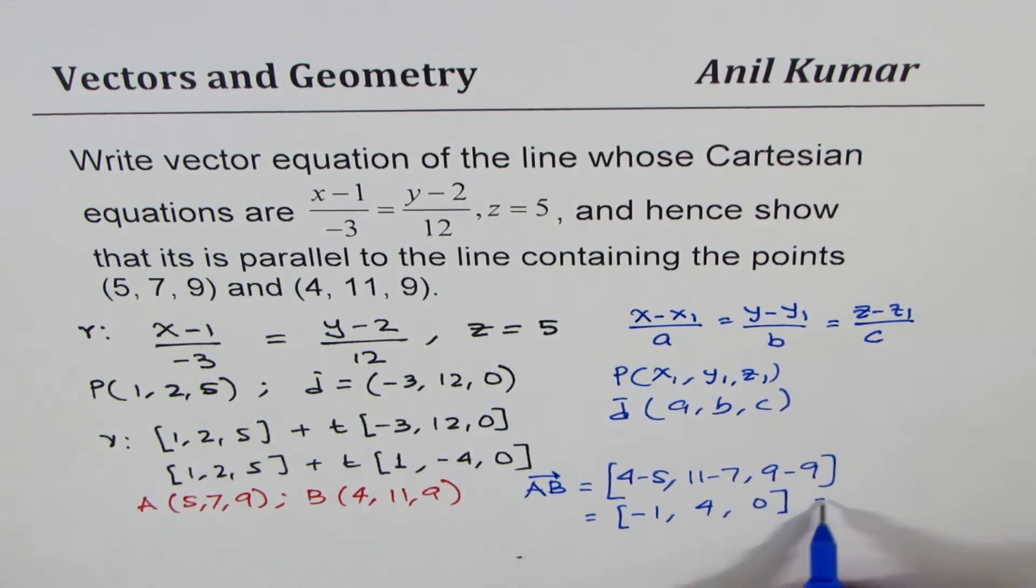You could factor out minus 1 and rewrite this as (1, -4, 0). Do you see that?